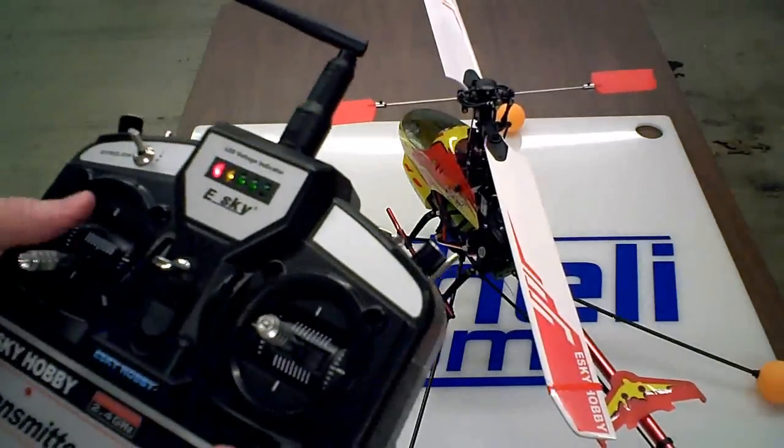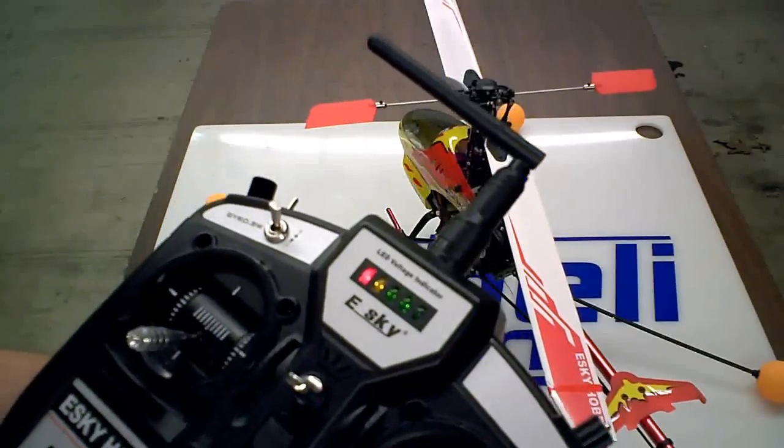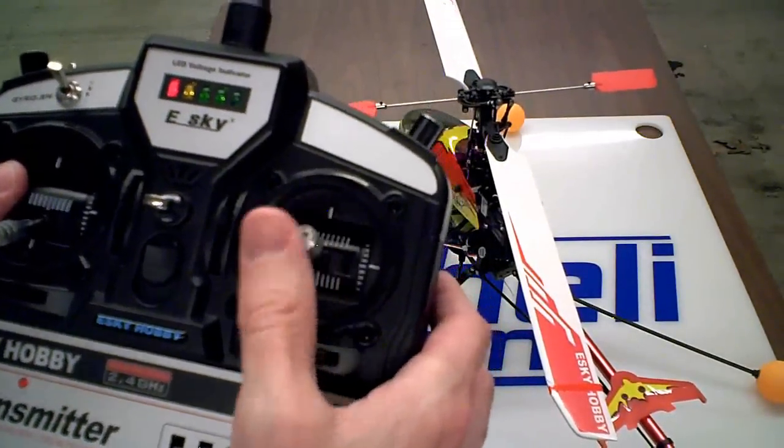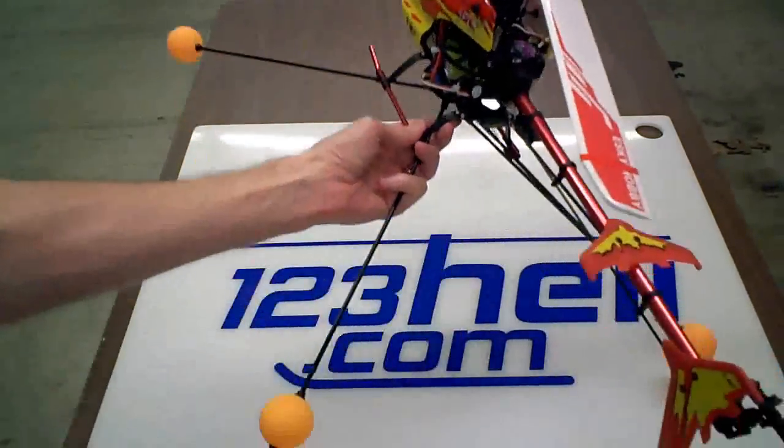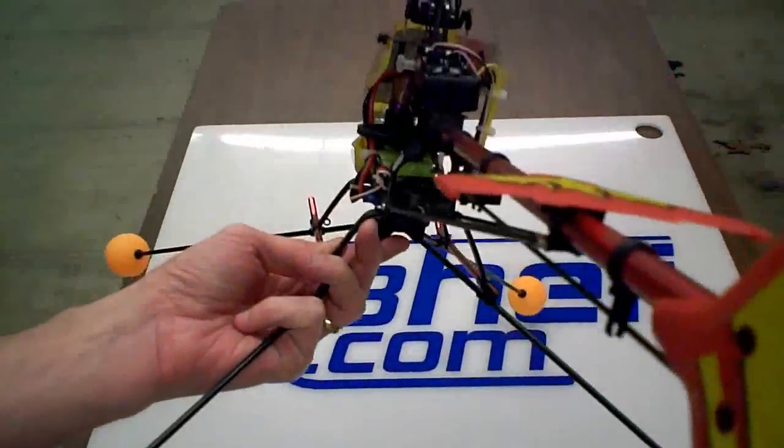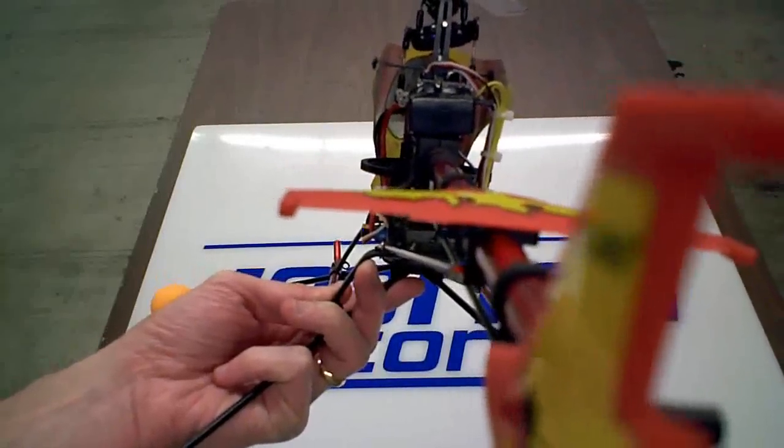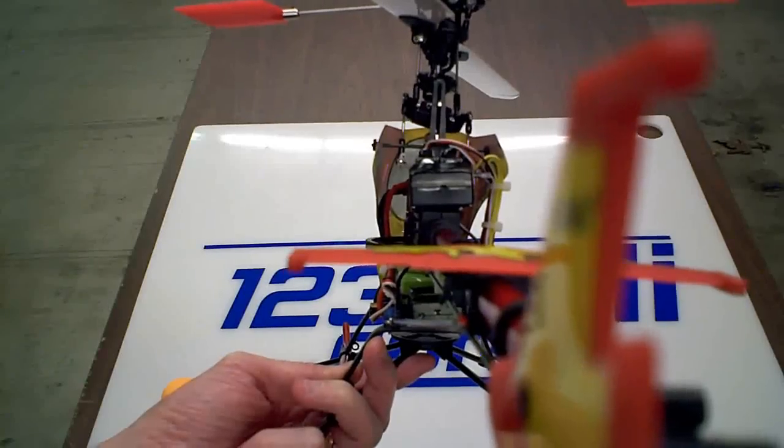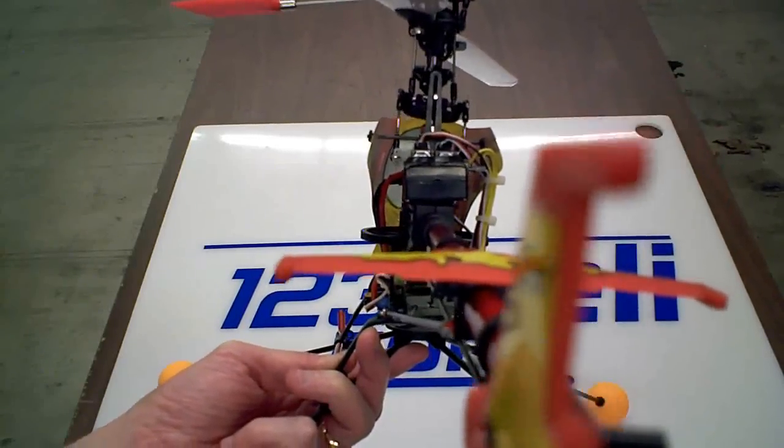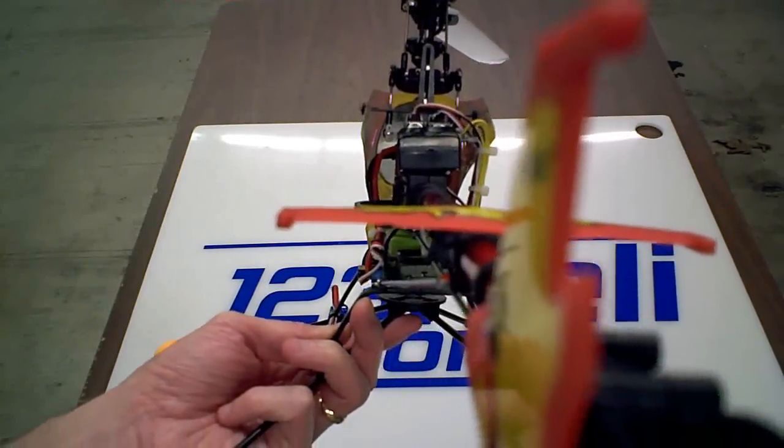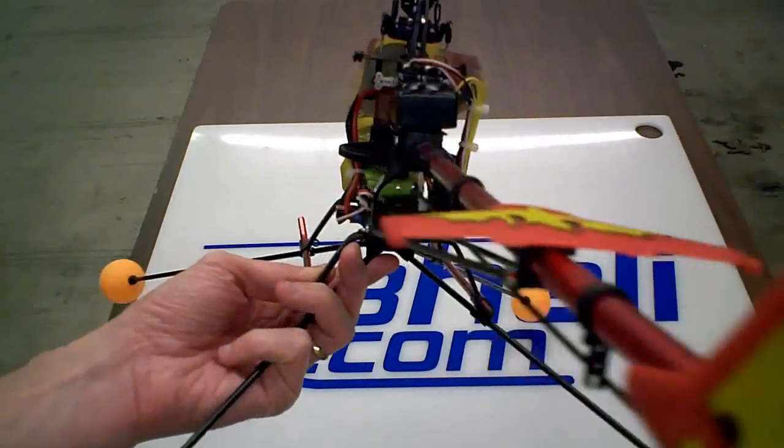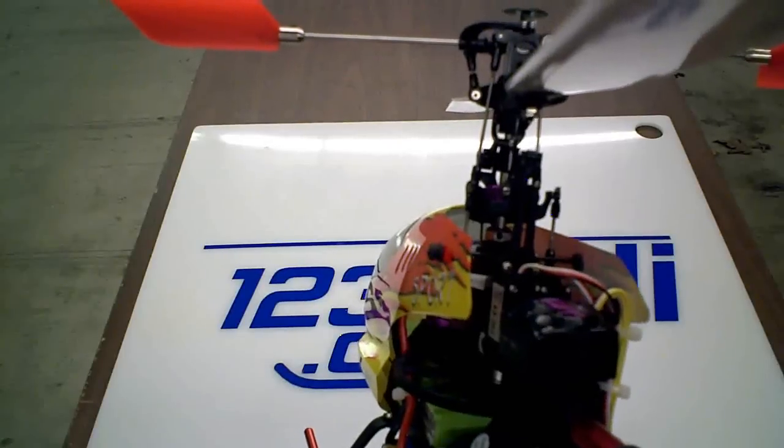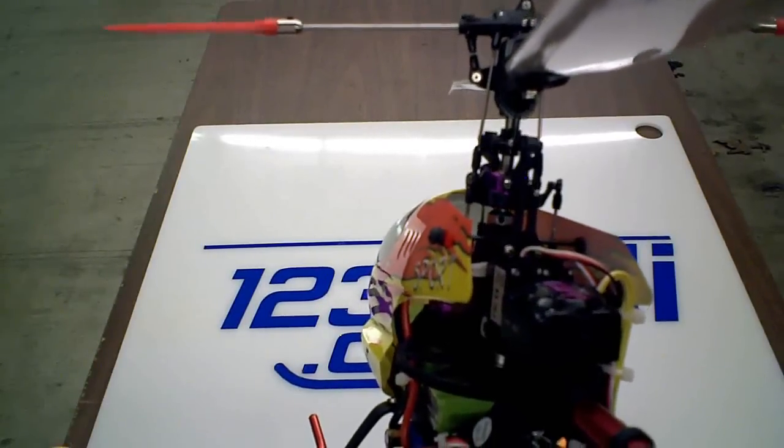Okay, now the first thing you want to do is verify your controls. Your left and right should move your swash plate the same. Left should tilt to the left and to the right. Let's verify that's operational and the direction is correct. Fore and aft should move the swash plate fore and aft. That's forward and backward.